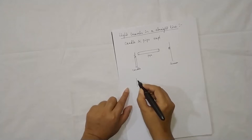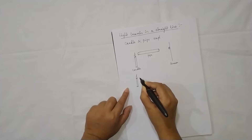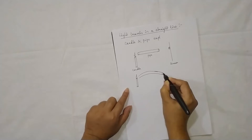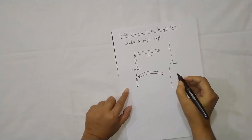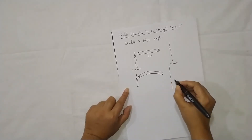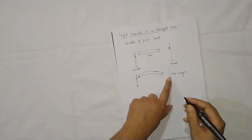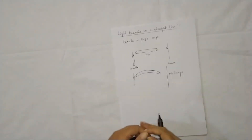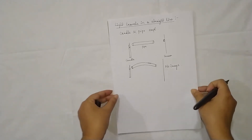This is a very elementary level experiment. In the second case, we take the same candle but bend the pipe. If you place a screen at the end, you can't see any image on the screen. This is elementary knowledge we already know, but here we will do something different.